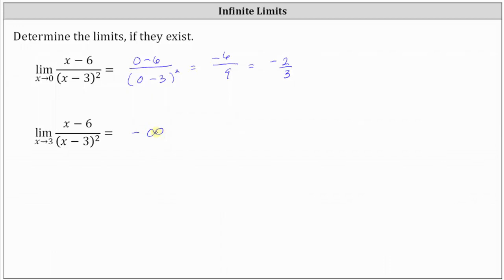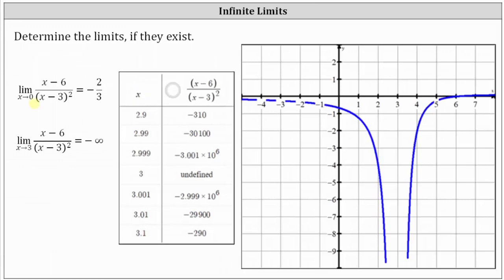So if the numerator is approaching negative three and the denominator is always positive and approaching zero, then the function will decrease without bound and approach negative infinity. We will now verify this using a table as well as a graph. Let's first verify the first limit where we're approaching x equals zero. If we sketch the vertical line x equals zero, which is the y-axis, we can see from the graph that if we approach x equals zero from the left and from the right, we are approaching the same point on the function — the point zero comma negative two thirds — which we found by substituting zero for x into the function.